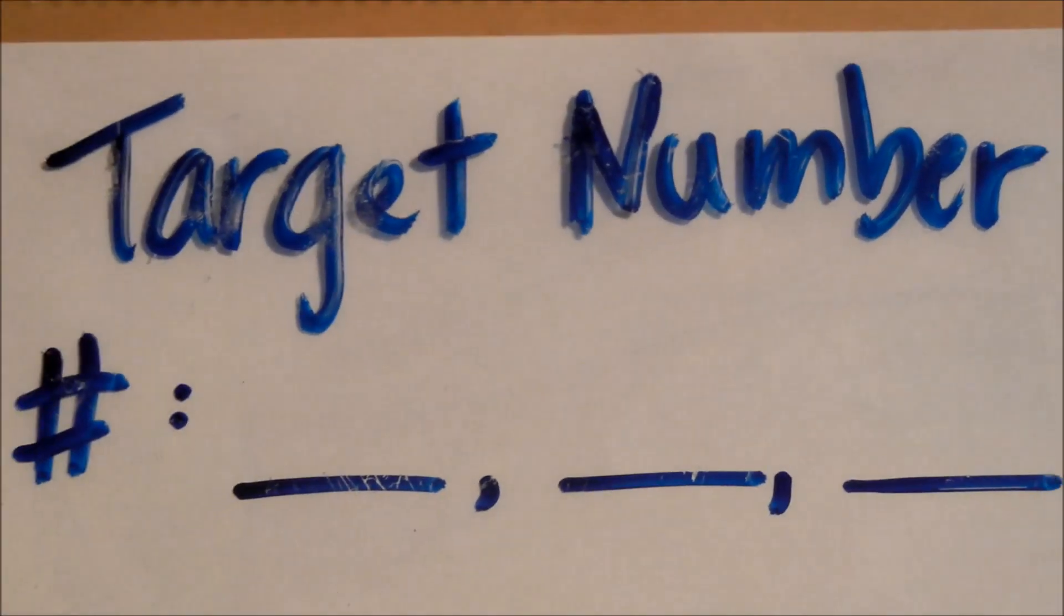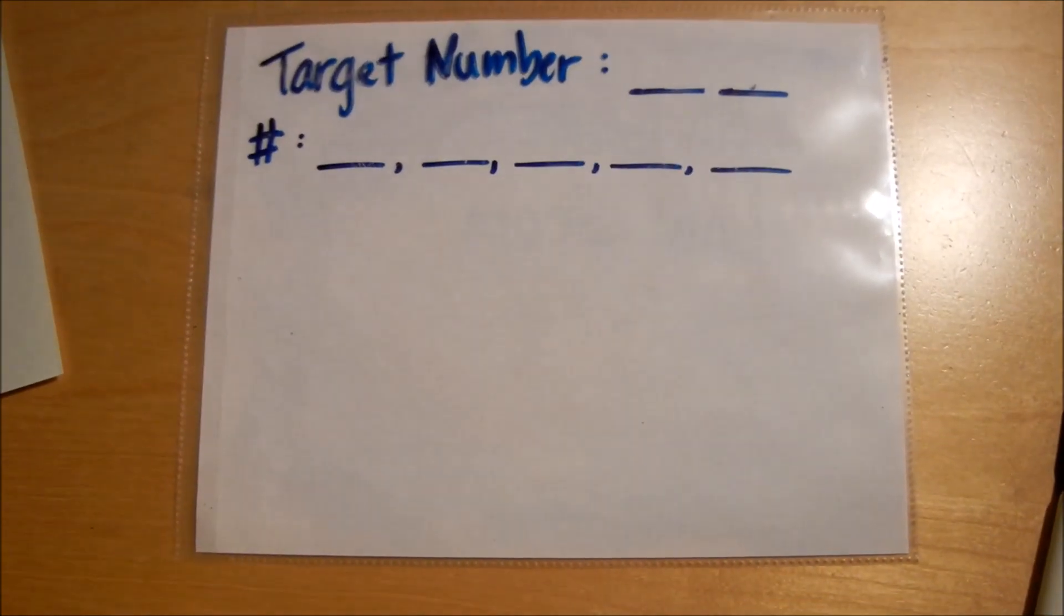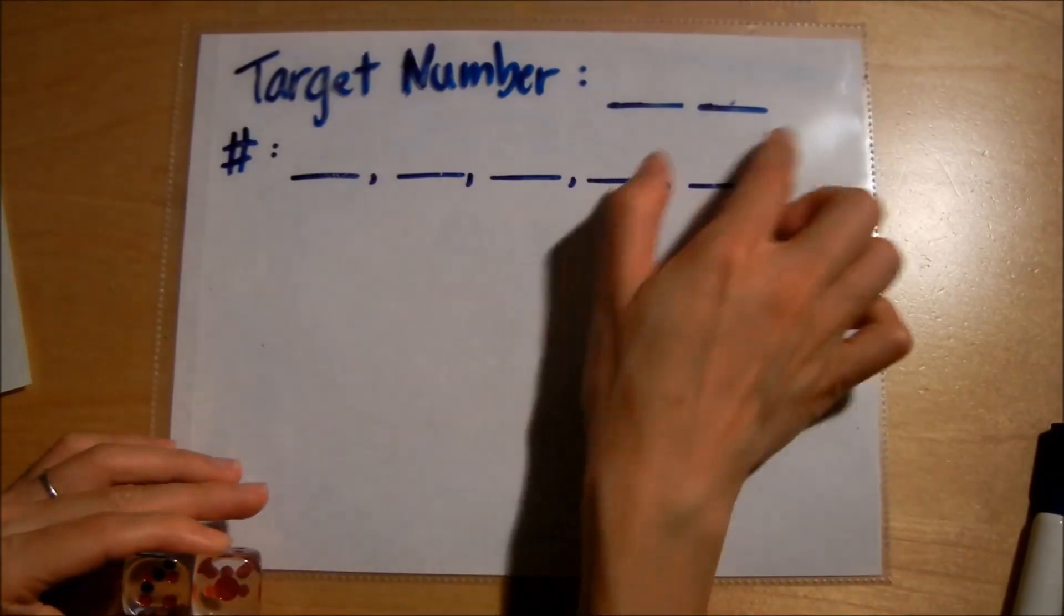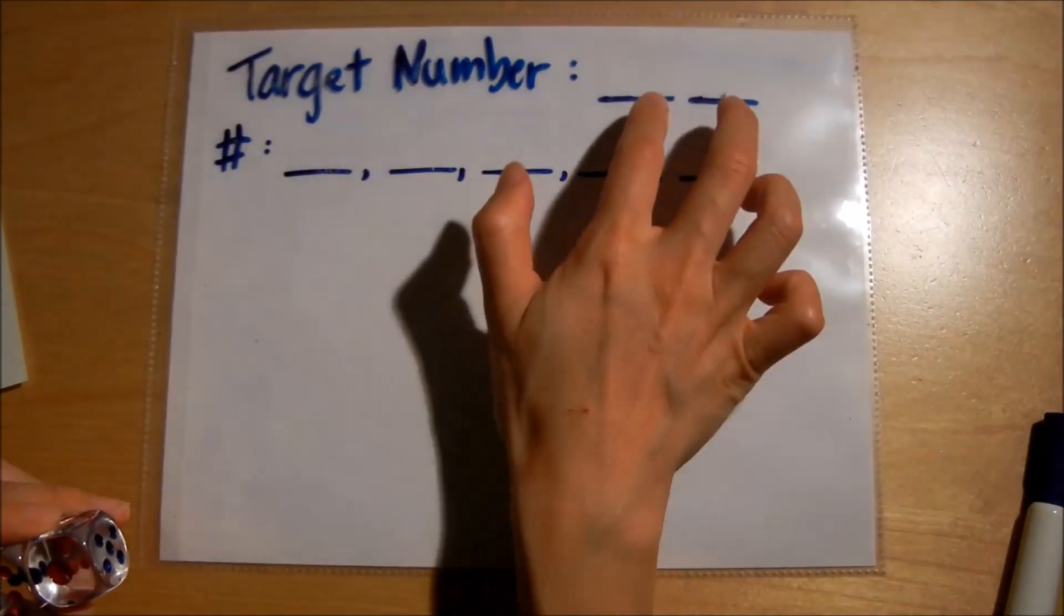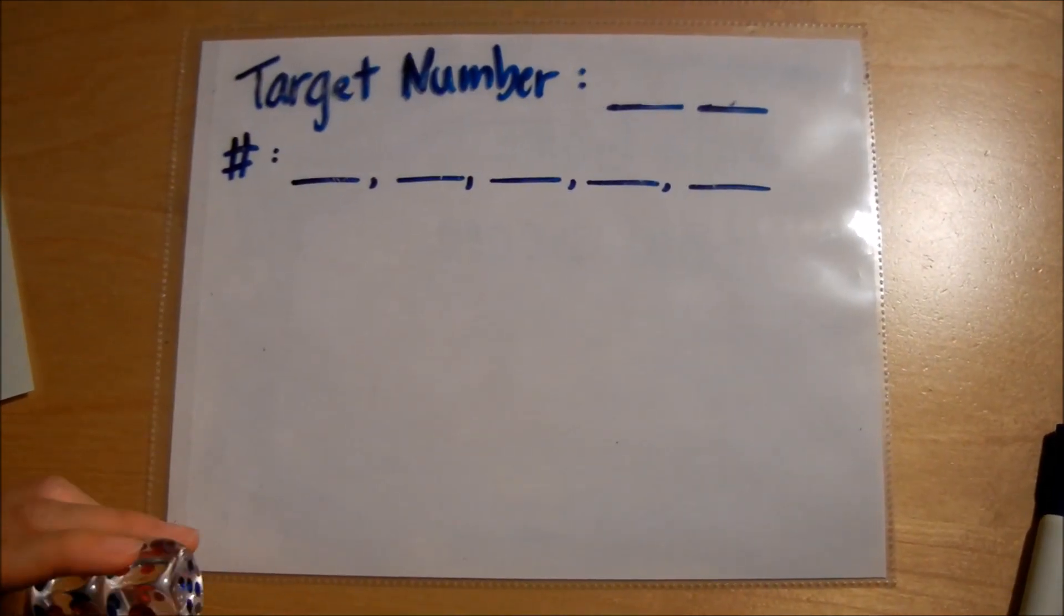This is a math game called target number. It's an excellent game to practice the order of operations and you need five dice. You need to set up your board like this where there's two blanks for your two-digit target number and then five blanks for the five numbers you're going to work with.